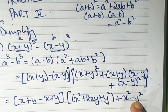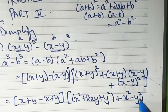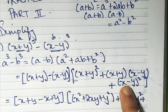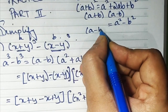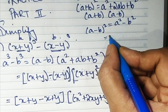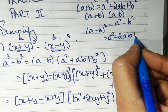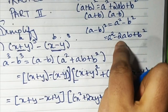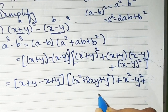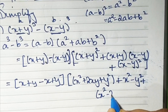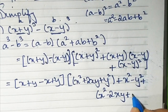Plus the other bracket: (x − y) the whole square. For that we use the a minus b whole square formula, which is a square minus 2ab plus b square. So it is x square minus 2xy plus y square.